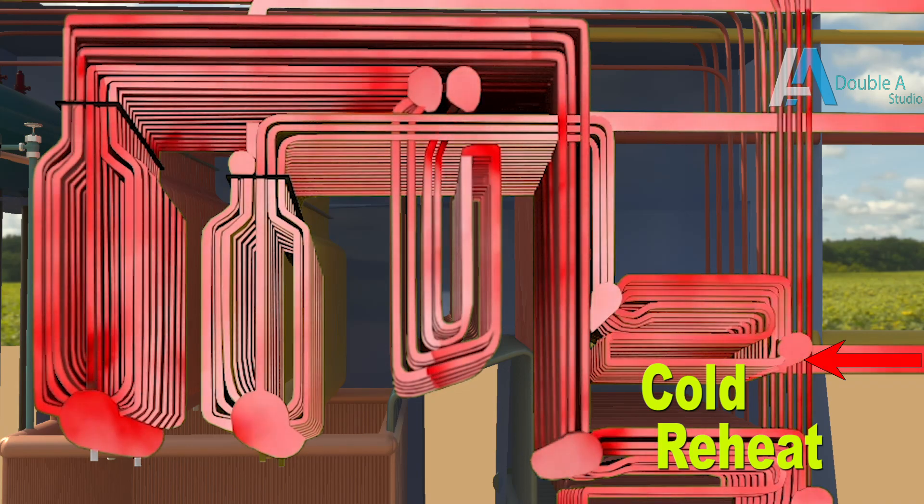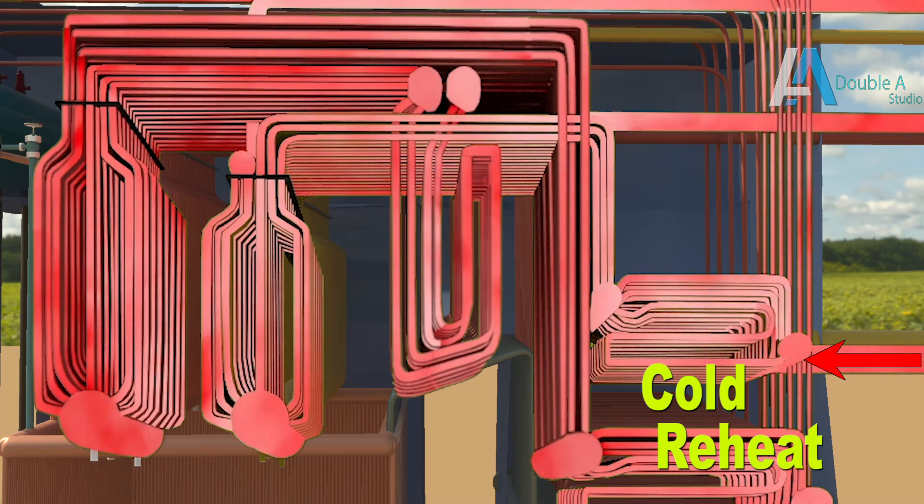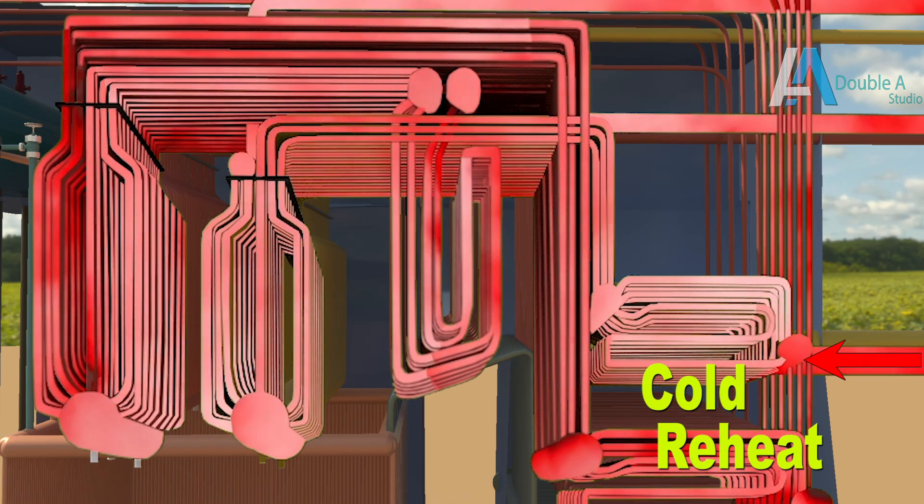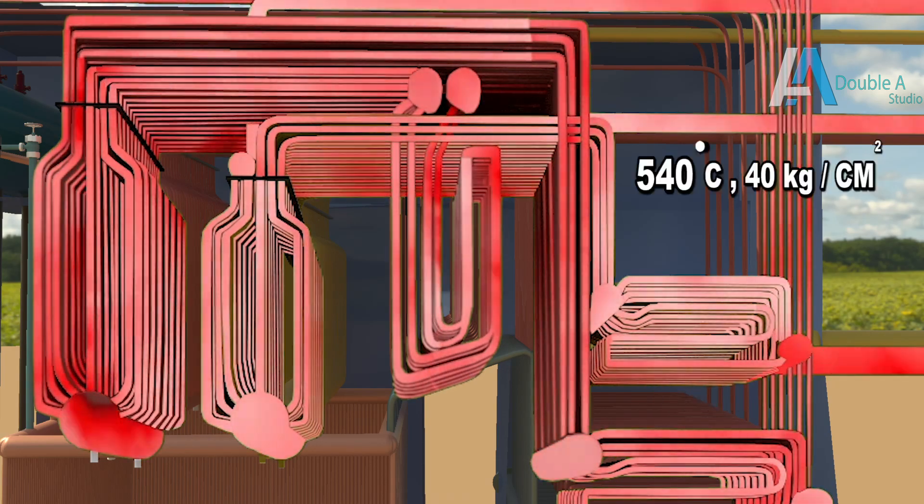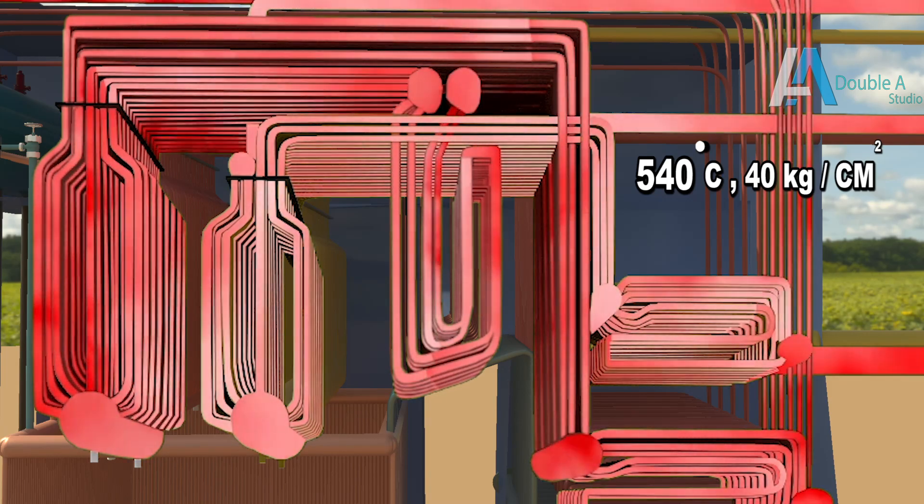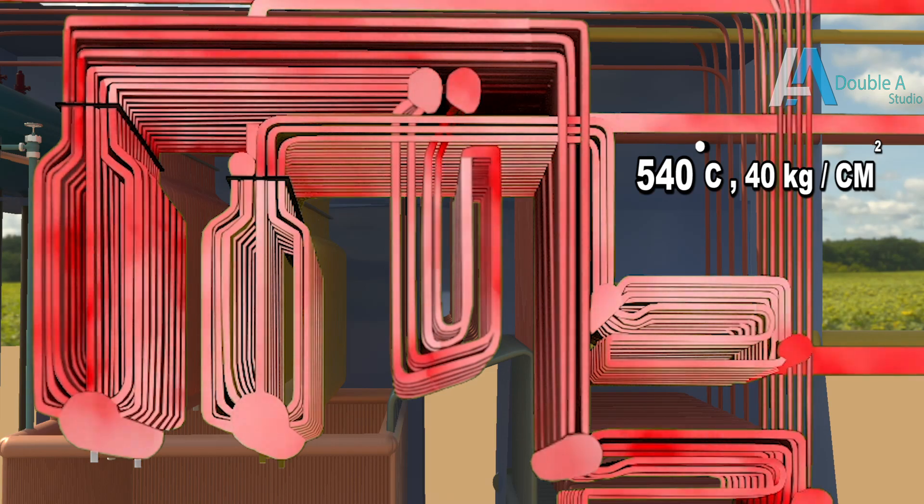After primary reheater steam is sent to final reheater for further reheating. Reheater increases temperature of steam at same pressure, that is, temperature of 540 degrees centigrade and pressure of 40 kilogram per centimeter square. This reheated steam is called hot reheat.